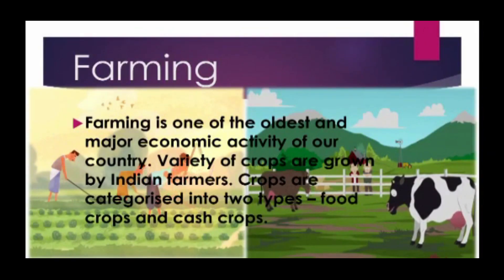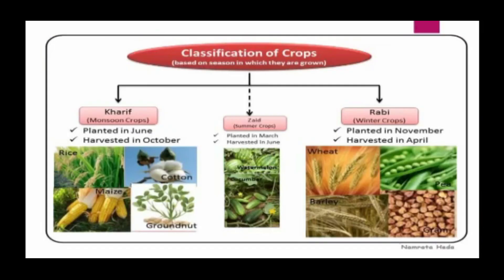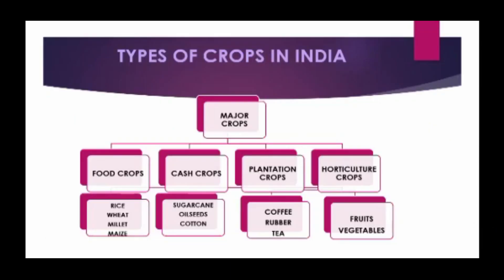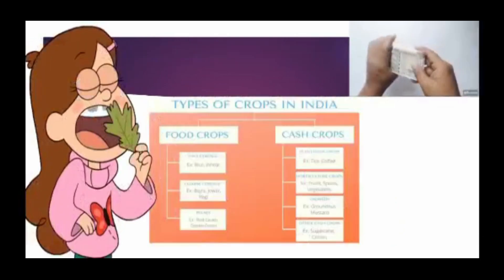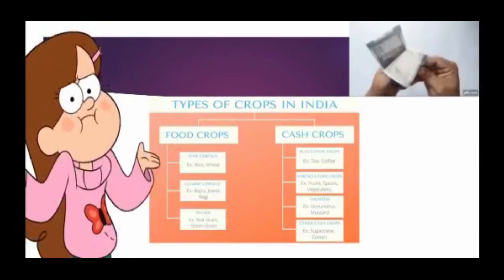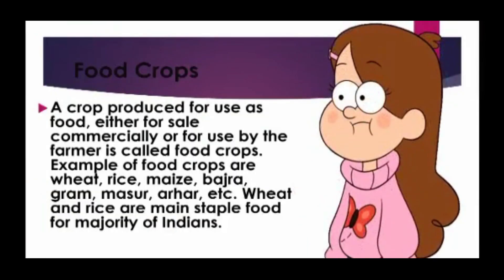A variety of crops are grown by Indian farmers. Crops are categorized into two types: food crops and cash crops. Crops are also classified into three types based on seasons: Kharif crops, Zaid crops, and Rabi crops. The four types of crops in India are food crops, cash crops, plantation crops, and horticulture crops. Here we are going to learn about food crops and cash crops.